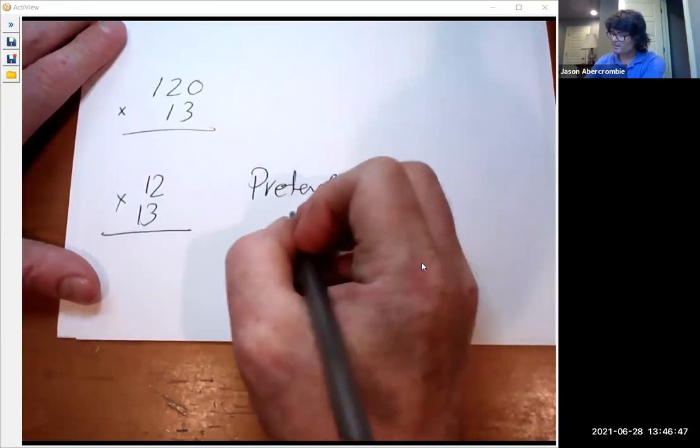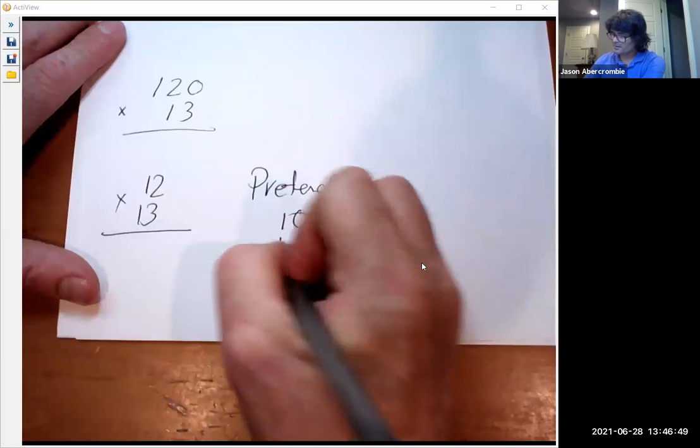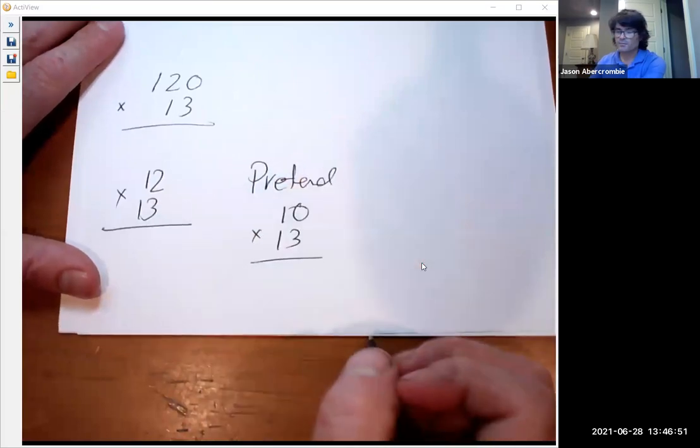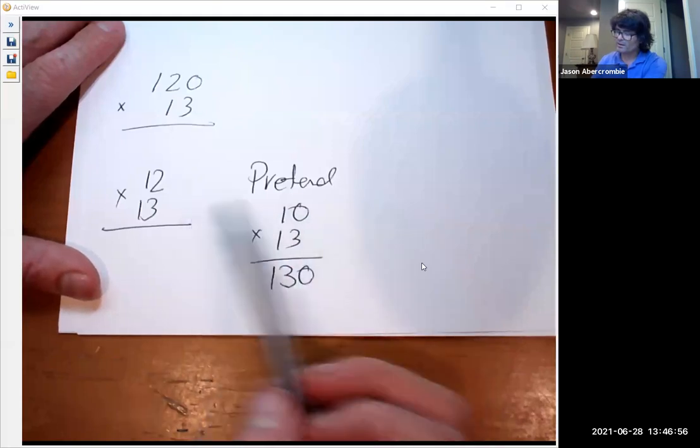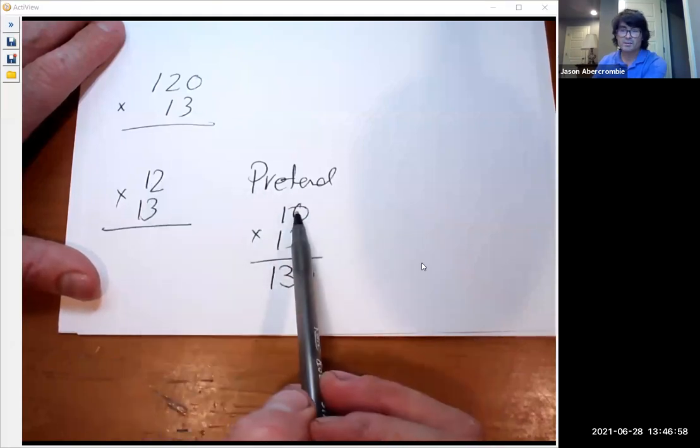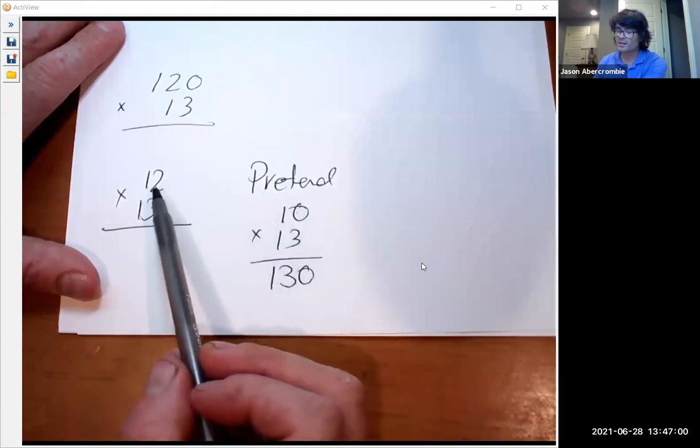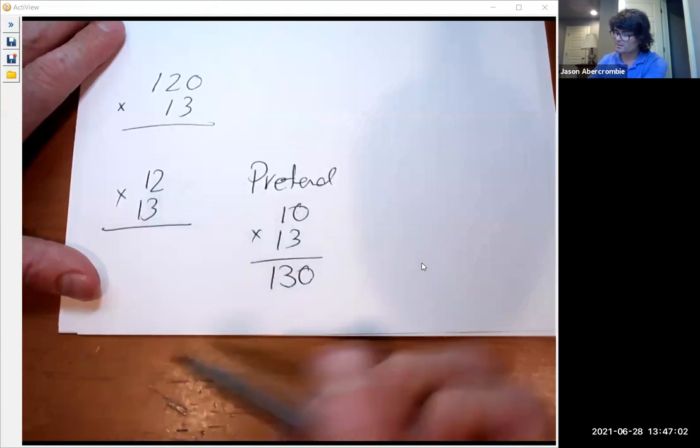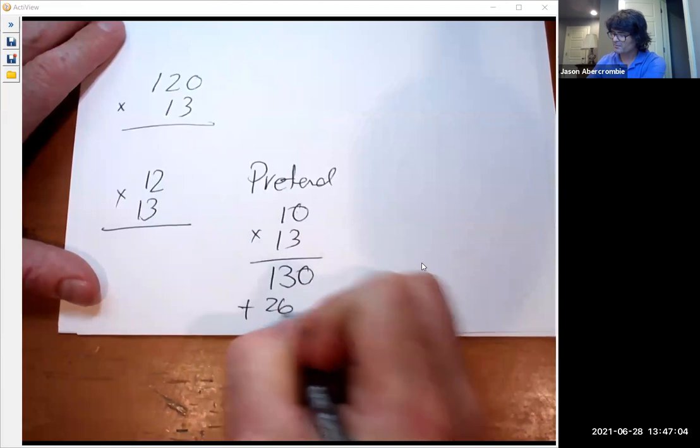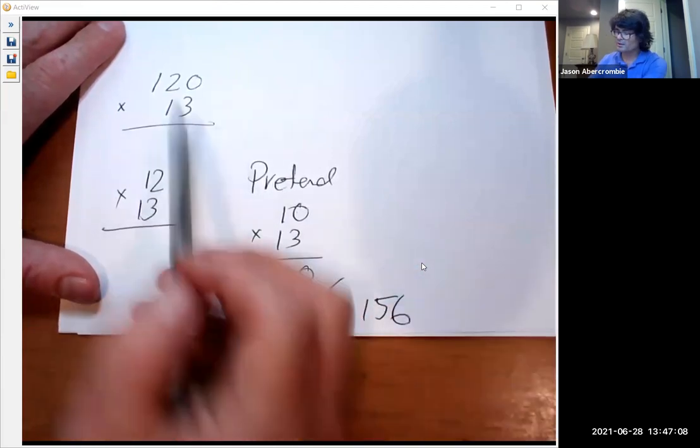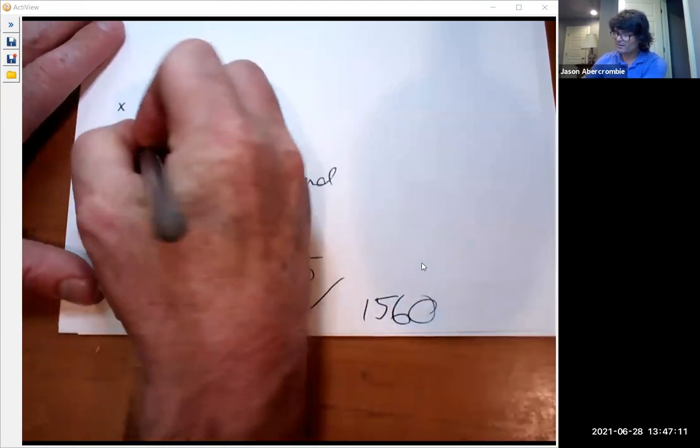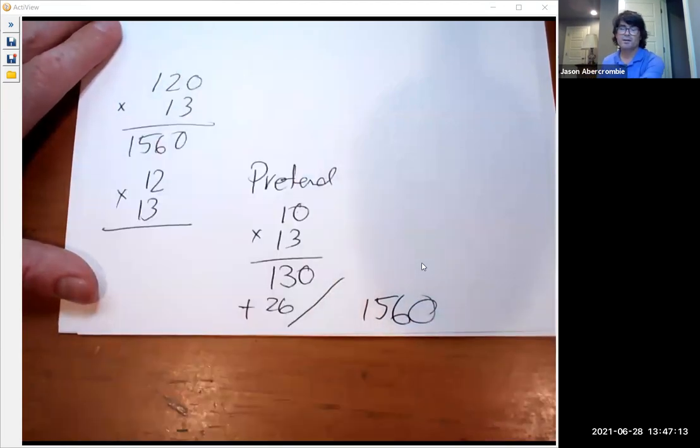this is 10 times 13 which is 130. And we took the 12 down to a 10, so we've got to remember the 2 we forgot. So 2 times 13 is plus 26. That's going to be 156. And don't forget we took off that zero, so we're going to have 1560 there as my product.